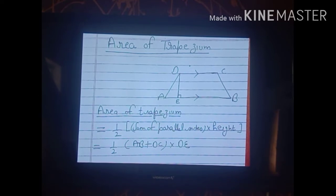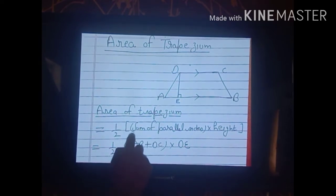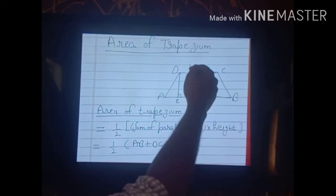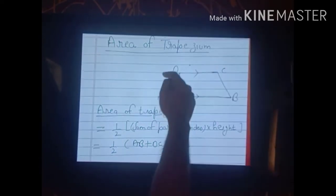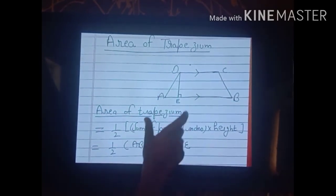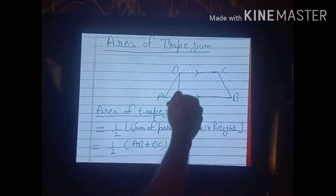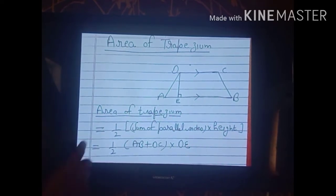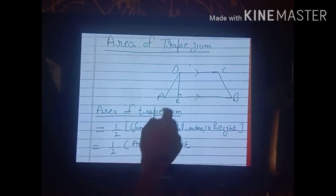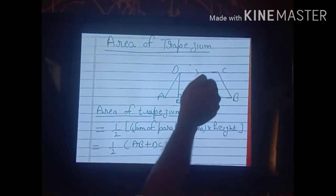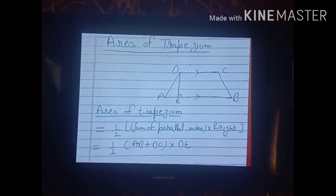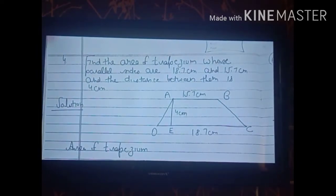The formula for the area of a trapezium is: Area = (1/2) × (sum of parallel sides) × height = (1/2) × (AB + DC) × DE. We add the two parallel sides, multiply by the height, and then multiply by one-half.